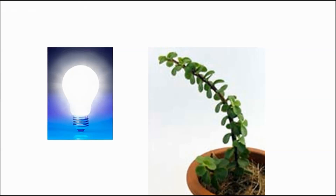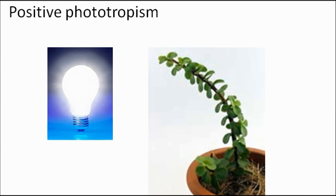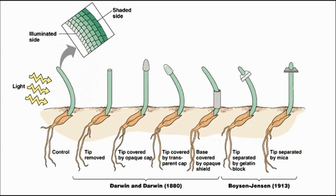If a plant grows towards a stimulus, we call it positive tropism. And if the plant grows away from a stimulus, we call it negative tropism. In this case, the stimulus is light, so we're looking at a positive phototropism.